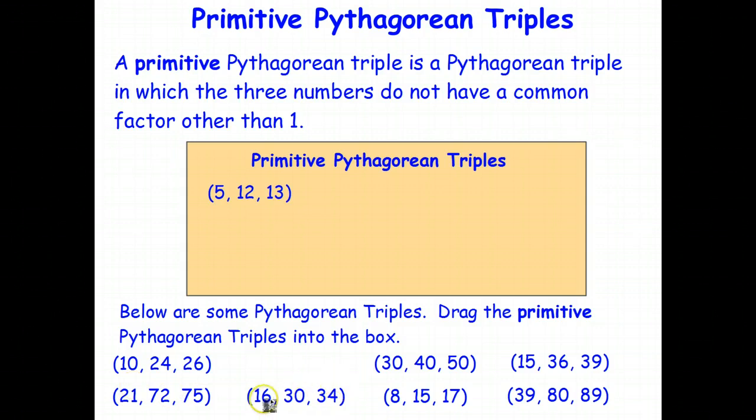16, 30, 34. Each of those numbers is even, so therefore 2 is a common factor. 8, 15, 17 is a Pythagorean triple. There's no common factor other than 1. And a bit of a tricky one, 39, 80, and 89. The fact that 89 is a prime number helps us realize that there are no numbers other than 1 that's a common factor of 39, 80, and 89. So there's a Pythagorean triple with some bigger numbers in it. So it turns out, out of that list, we just had 3 that were primitives.